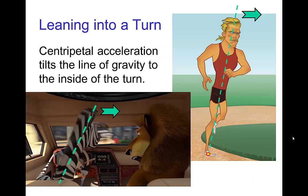Another type of acceleration that causes a tilt in the line of gravity is when the character is doing a turn. In that case, there is a centripetal acceleration towards the inside of the turn, and to stay in balance the character naturally leans into the turn.